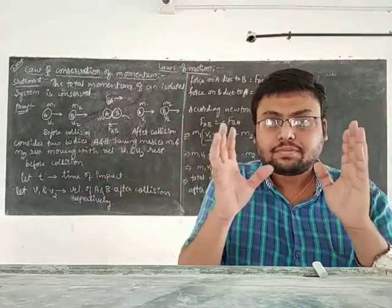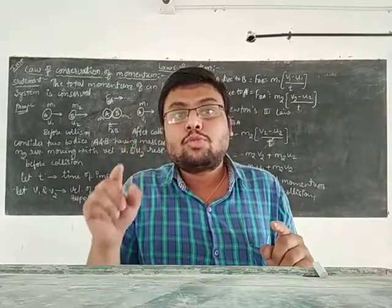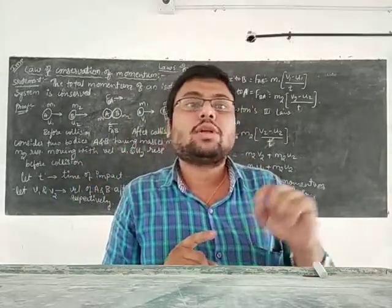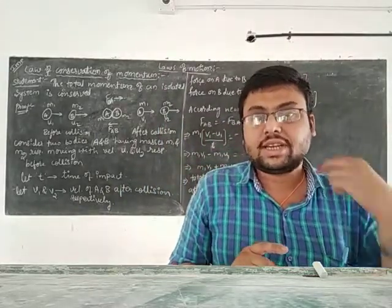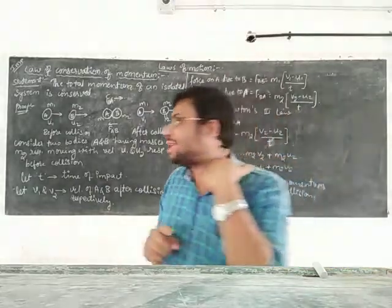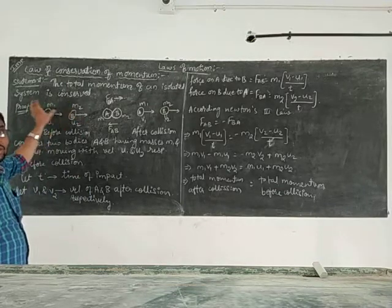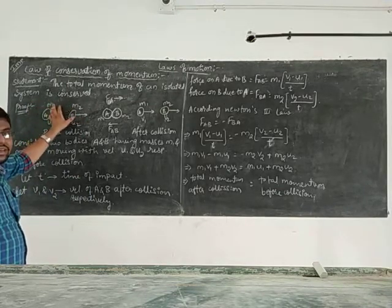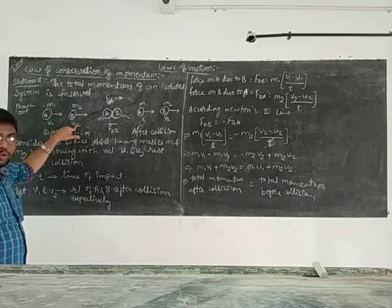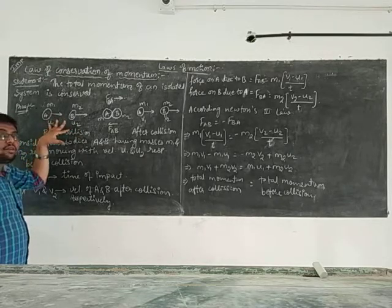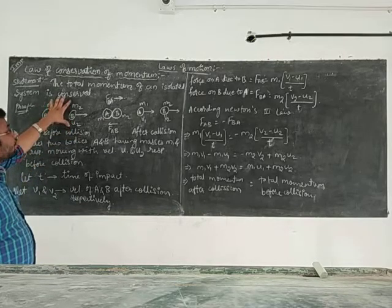Whenever two bodies are under collision, the total momentum of the system before collision is equal to the total momentum after collision. Now for the proof: consider two bodies A and B moving in one direction with initial velocities U1 and U2, where U1 and U2 are the initial velocities and M1 and M2 are the masses of the two bodies.